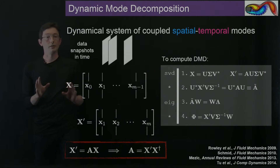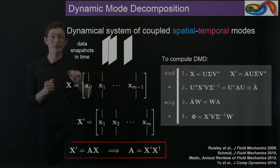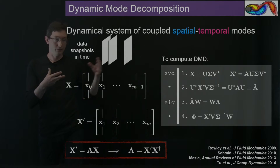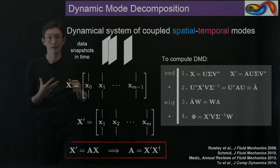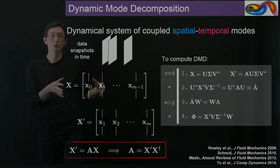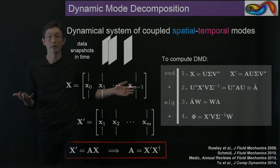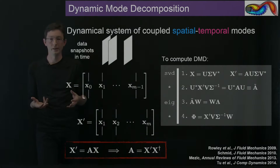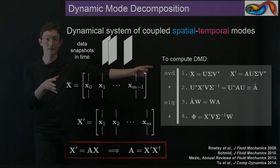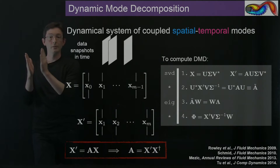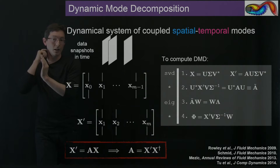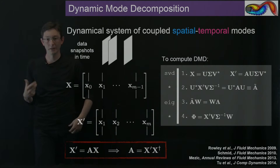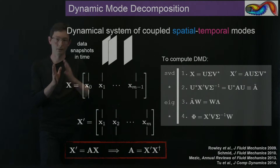The first step is to compute a singular value decomposition of the data matrix X. What I get out are matrices U, sigma, and V complex conjugate transpose, where the columns of U are my proper orthogonal decomposition modes — my POD modes. For those familiar with dimensionality reduction in fluid systems, the SVD of X gives POD modes in U, ordered in terms of importance from the most energy-containing columns first to the least energy-containing columns.